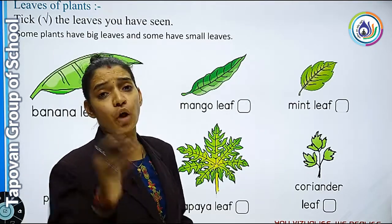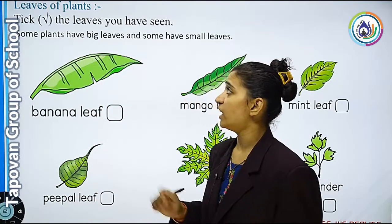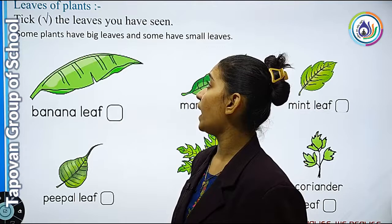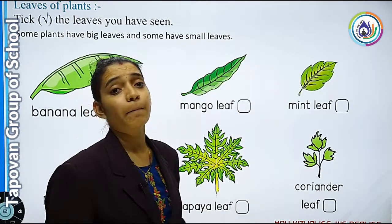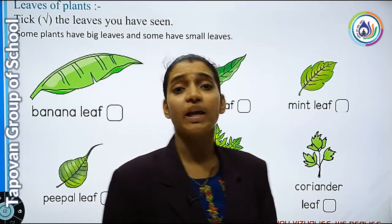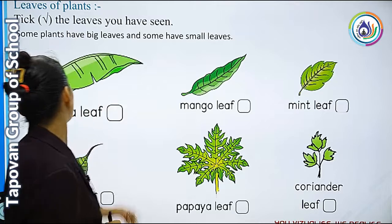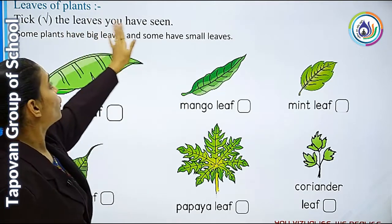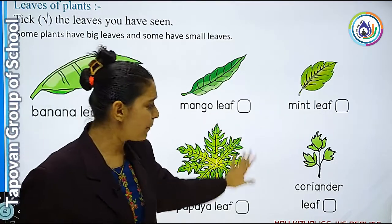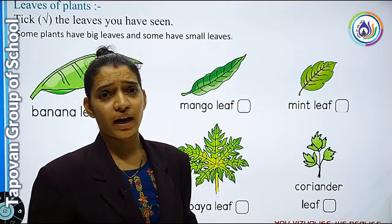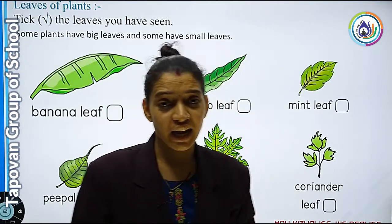Next क्या है? तो आपको आपकी textbook का page turn करना है. Next topic क्या है? Leaf of plants. मैंने आपको बताया है कि different types के leaves होते हैं. देखते हैं — Take the leaves you have seen. यहाँ पे सिर्फ आपको tick mark करना है कि जो leaf आपने देखा है.